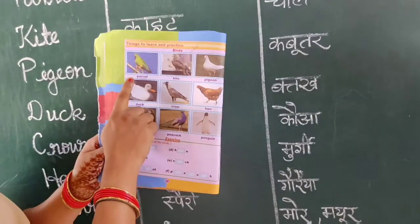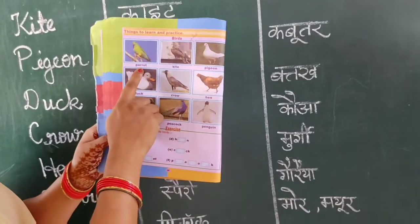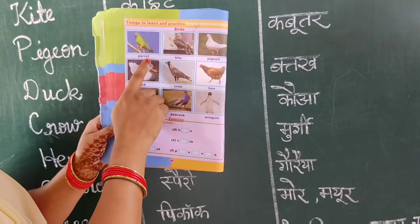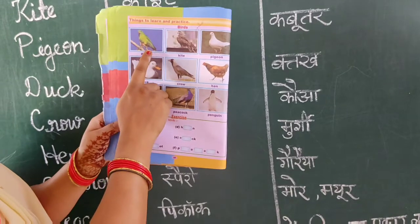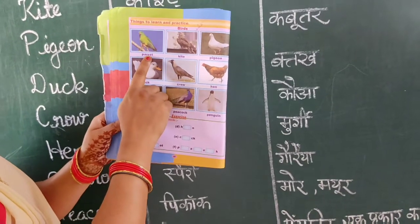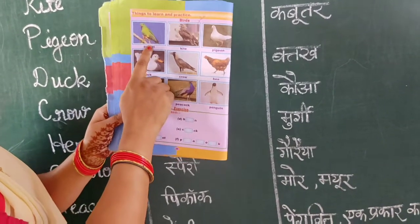First is P-A-R-R-O-T. P-A-R-O-T. P-A-R-O-T means TOTA.